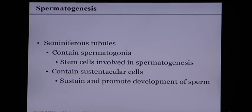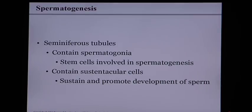The process of sperm creation is called spermatogenesis, and it begins in the seminiferous tubules. It starts with stem cells called spermatogonia — which are constantly dividing and making new sperm cells. Along with the spermatogonia, there are special cells called sustentacular cells, which sustain and promote the development of sperm, nourishing them as they develop.